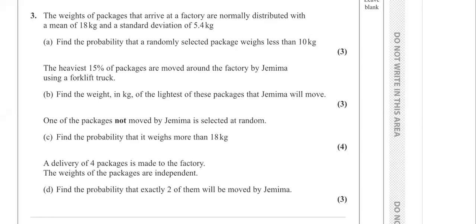The question states: the weights of packages that arrive at a factory are normally distributed with a mean of 18 kg and a standard deviation of 5.4 kg. Let W be the weight of the packages. So W is normally distributed with mean 18 and variance 5.4 squared, i.e., W ~ N(18, 5.4²).